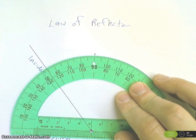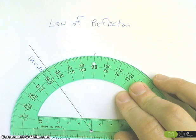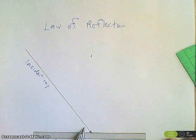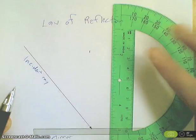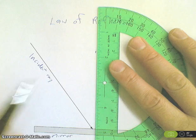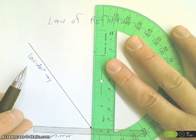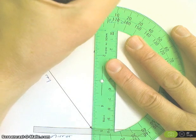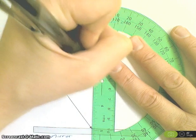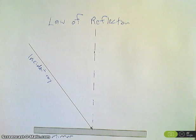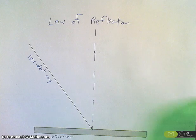So, I put a mark there at the 90 degree. That mark there, and where the ray hits the mirror, are the two points that I need to make my normal line. I usually make my normal line as a dotted line because it's a reference. The light never actually follows this path. It's just a reference point for everything.